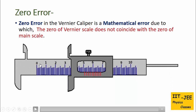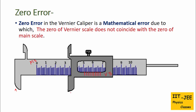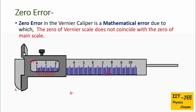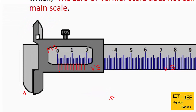Let me show you. Here two scales are given — this scale is the main scale and this sliding scale is the vernier scale, and there are two jaws. When we bring these two jaws together, you can see the zero of the vernier scale and the zero of the main scale. They don't coincide; ideally they should be in the same line, but they are not — so this kind of error is called zero error.